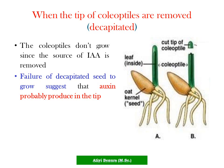When another new tip is present, new growth can be produced again, because of the presence of auxin.